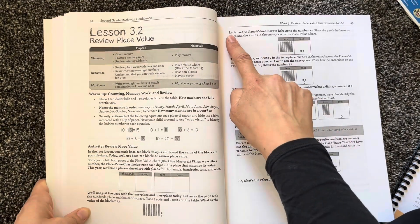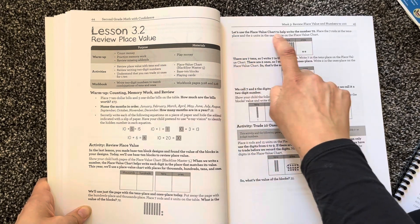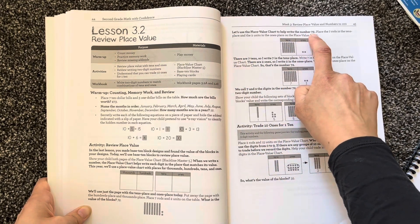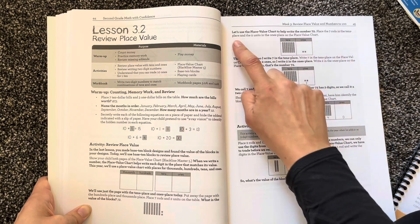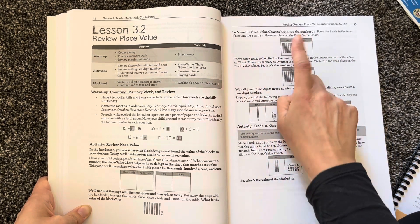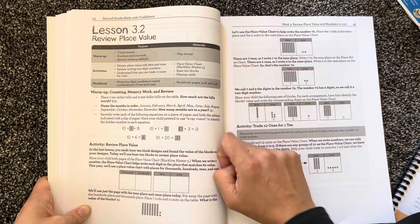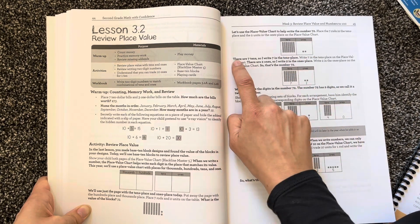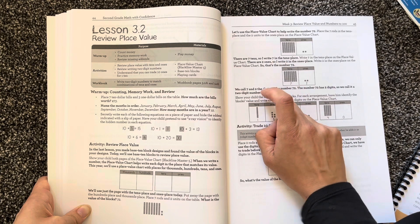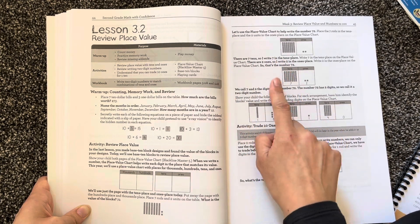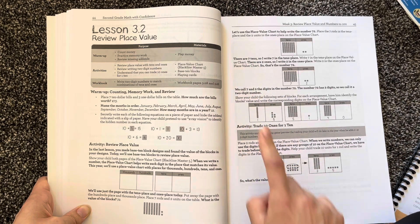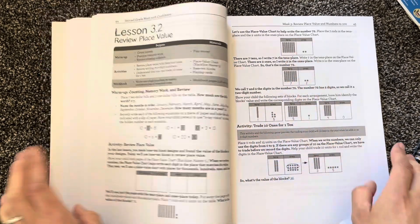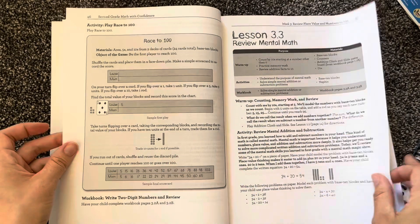And then you would go ahead and do the lesson. So it tells you, 'let's use the place value chart to help write the number 72.' And then it says place the seven rods in the tens place and the two units in the ones place. So it tells you exactly what to do. And then you would say 'there are seven tens, so I write seven in the tens place.' So there's just no guesswork. You can kind of follow it down, know exactly what to say, and look at all these nice pictures. The instructor's guide is just full of that.